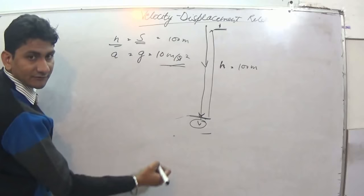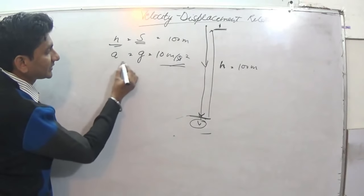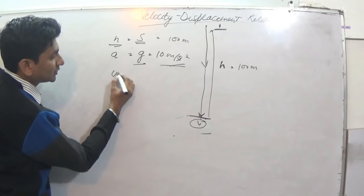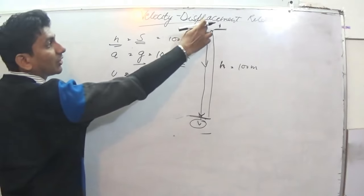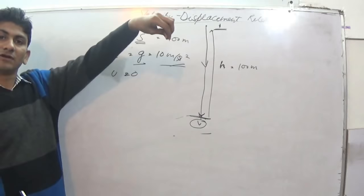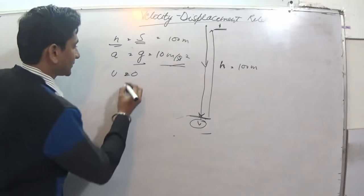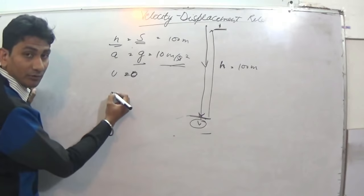So this is how you will be getting the further equation. Now, g is equal to 10, s is equal to 100, u is equal to 0. Why? You dropped it from here, there was no initial velocity, you didn't throw it, you just dropped it. So u was 0.